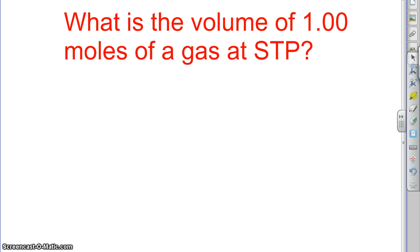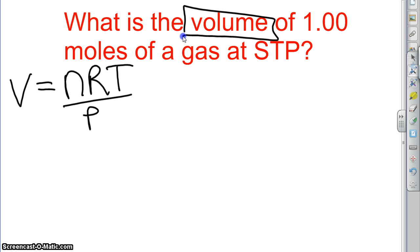So first thing you've got to do is figure out, well what is the formula that we're going to use? So we look and see what we're being asked. We're being asked to find the volume. So we know that the volume of an ideal gas is given by nRT over P.